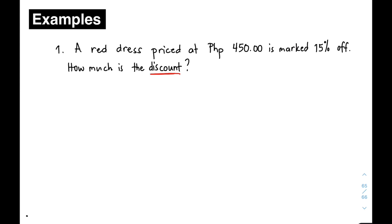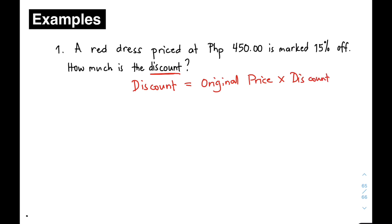We are asked for the discount. When you're trying to find a discount, the formula is simply: Discount equals Original Price times Discount Rate, or in symbols, D = OP × DR.